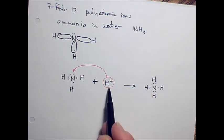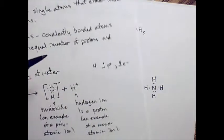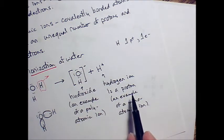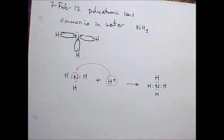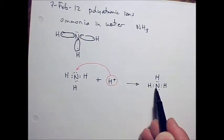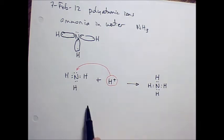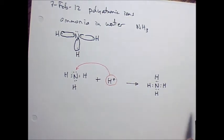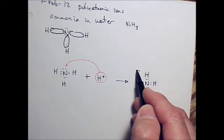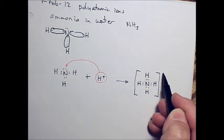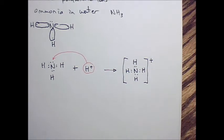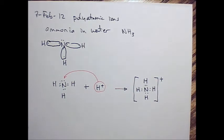Remember that hydrogen ion we said was essentially a proton. We've essentially added an extra proton to this structure to make this. So this has one more proton than the electrons that are in that whole structure. So that whole structure has a positive charge. Are you following me here? Is anybody confused? Do you understand why we get that?